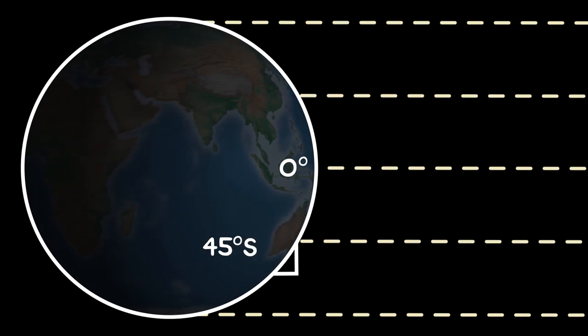Conversely, slope aspects facing away from the sun receive minimal solar radiation when their slope angle equals the latitude of their location.